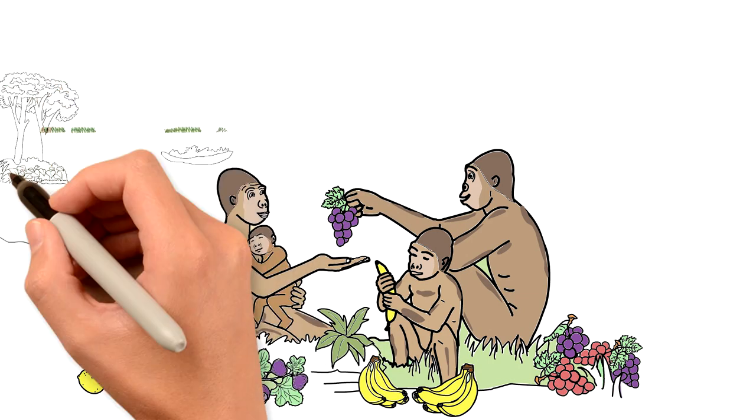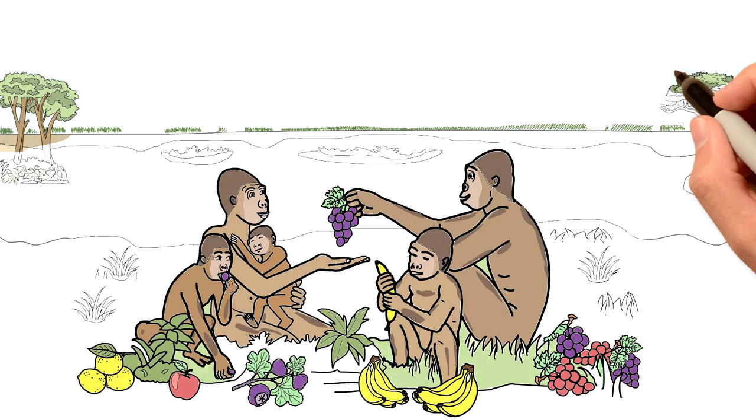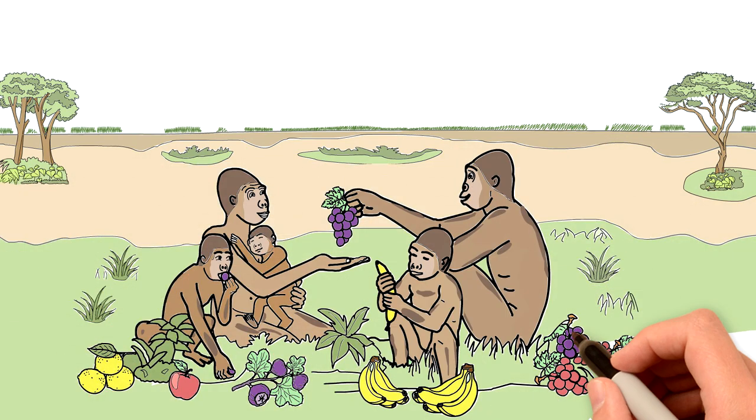So that's how apes became bipedal and kind to each other. As a result, ancient apes turned into Australopithecus, but still not entirely human yet.